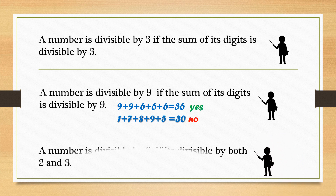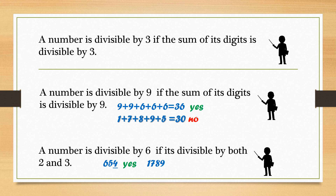If a number is divisible by both 2 and 3, then it is divisible by 6. For example, 654: the last digit is an even number, so it is divisible by 2. Next, 6 plus 5 plus 4 equals 15, which is a multiple of 3, so it is divisible by 3. As it is divisible by both 2 and 3, it is divisible by 6.